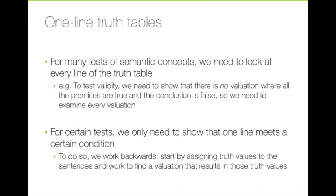It turns out that for many of the tests we run for these various semantic concepts, we need to look at every line of the truth table. For example, to test validity, we need to show that there is no valuation where all the premises are true and the conclusion is false. So we need to look at every valuation to check that, even though we don't need to complete every sentence in every valuation — we at least need to look at part of every valuation. But for certain tests, we only need to show one line that meets a particular condition, and that condition will depend on the test.